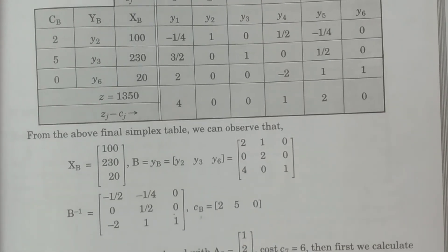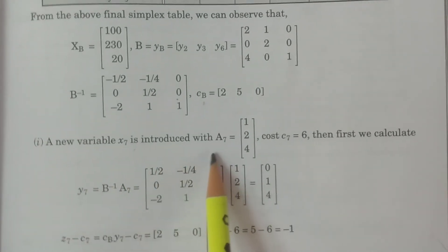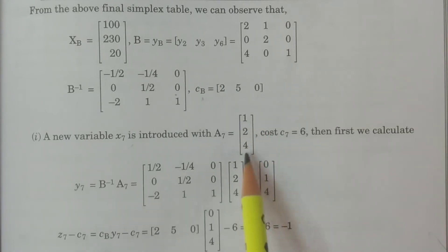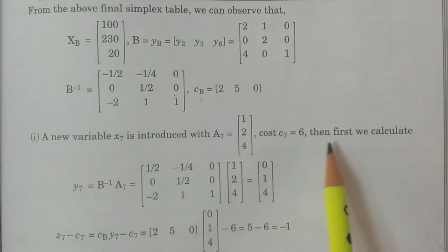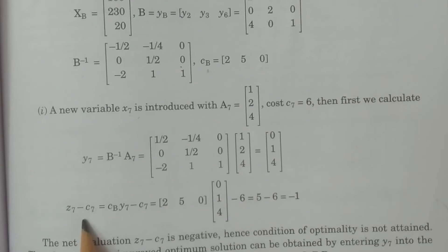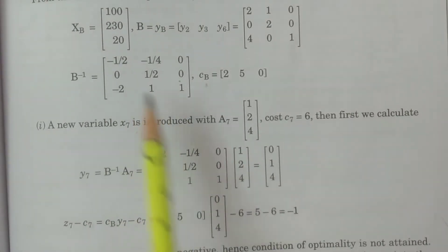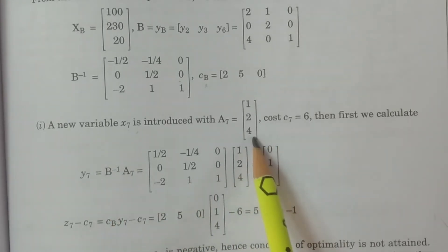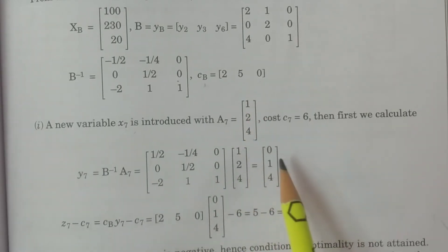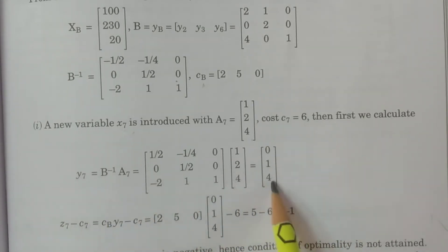Now for Question 1: when new variable x7 is introduced with a7 = (1, 2, 4) and cost c7 = 6, we perform two calculations. First, y7 = B_inverse · a7. Multiplying B inverse by a7 = (1, 2, 4) gives y7 = (0, 1, 4).